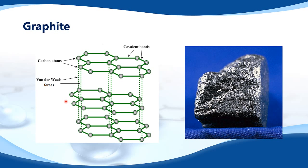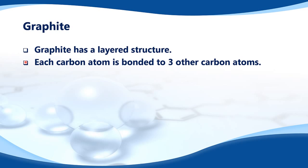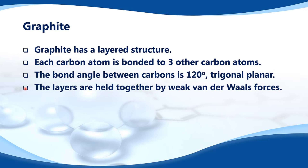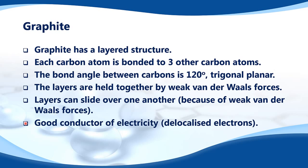Graphite also has delocalized electrons — electrons that are free to move around within the structure — which means it is a good conductor of electricity. To summarize: graphite has a layered structure, each carbon atom is bonded to three others at a bond angle of 120 degrees (trigonal planar), the layers are held together by weak Van der Waals forces allowing them to slide over one another, and graphite is a good conductor of electricity due to its delocalized electrons. Graphite is used in pencils.